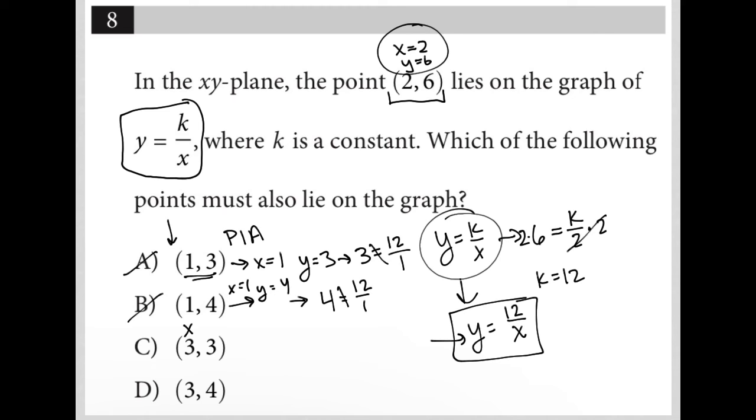How about choice C, where x is 3 and y is 3? We'd have 3 equals 12 over 3. I'm just plugging in 3 for y and 3 for x from our equation. This is also not true, so choice C is gone.